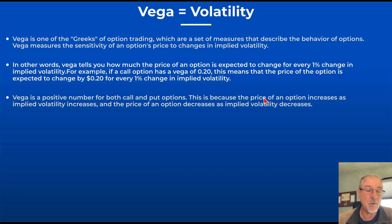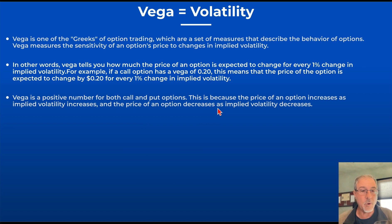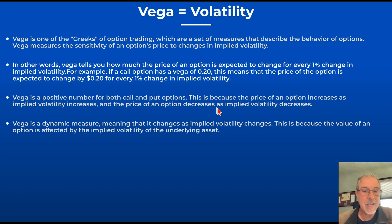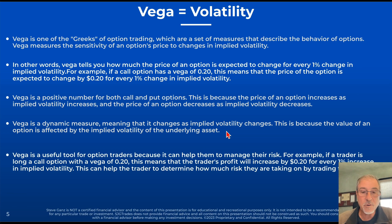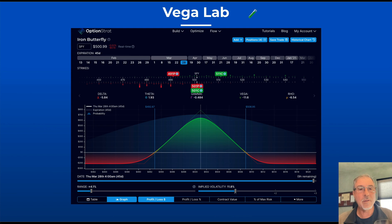The price of an option increases as implied volatility increases, and decreases as implied volatility decreases. How this impacts your P&L depends on whether you are long or short those options when there is a shift in volatility. Vega is a dynamic measure — it changes as implied volatility changes because the value of an option is affected by the implied volatility of the underlying asset. If a trader is long a call option with a vega of 0.20, the trader's profit will increase by 20 cents for every 1% increase, helping them understand how their position will be impacted in different volatility environments.